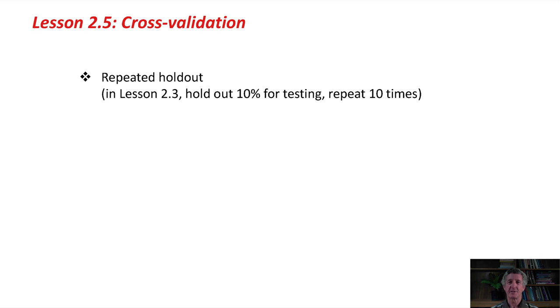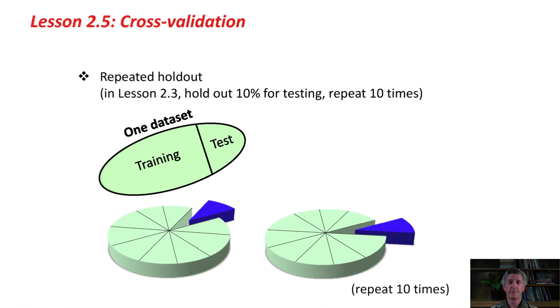In a previous lesson, we held out 10% for testing and repeated that 10 times. That's the repeated holdout method. We've got one data set, and we divided it independently 10 separate times into a training set and a test set. Now, with cross-validation, we divide it just once, but we divide it into, say, 10 pieces. Then we take 9 of the pieces and use them for training, and the last piece for testing. Then, with the same division, we take another 9 pieces for training and the held-out piece for testing. Then we do the whole thing 10 times, using a different segment for testing each time.